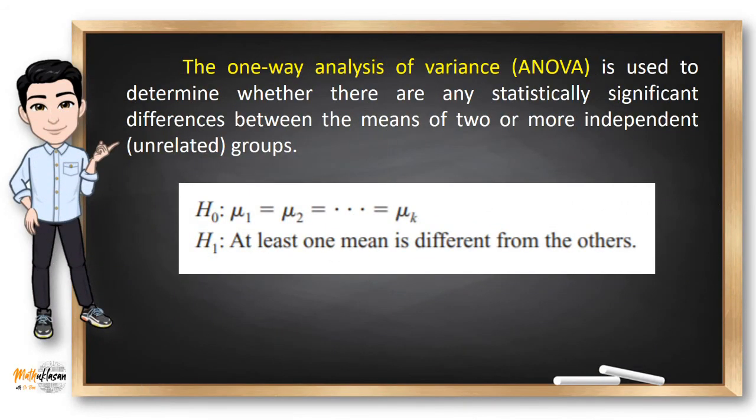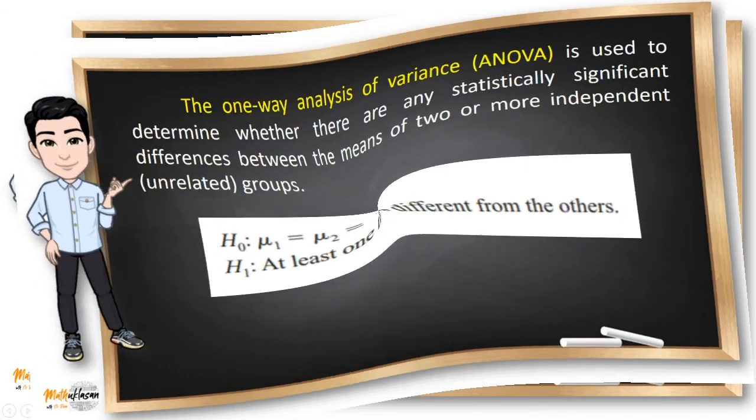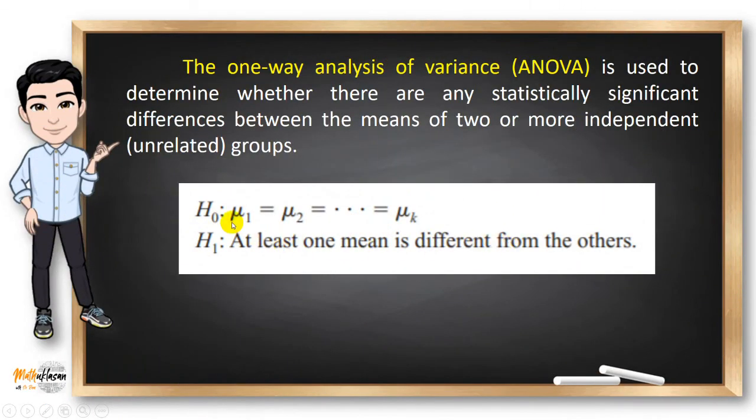Whenever we want to compare the means of two groups, we use the t-test independent. But if we want to compare two or more means of groups, then we can use one-way analysis of variance or ANOVA. That is why the null hypothesis in ANOVA states that there are no significant differences between means of two or more groups, while the alternative hypothesis states that at least one of the means is different from the others. So it could be μ₁ different from μ₂ or μ₁ is different from μ₄ or μ₅.